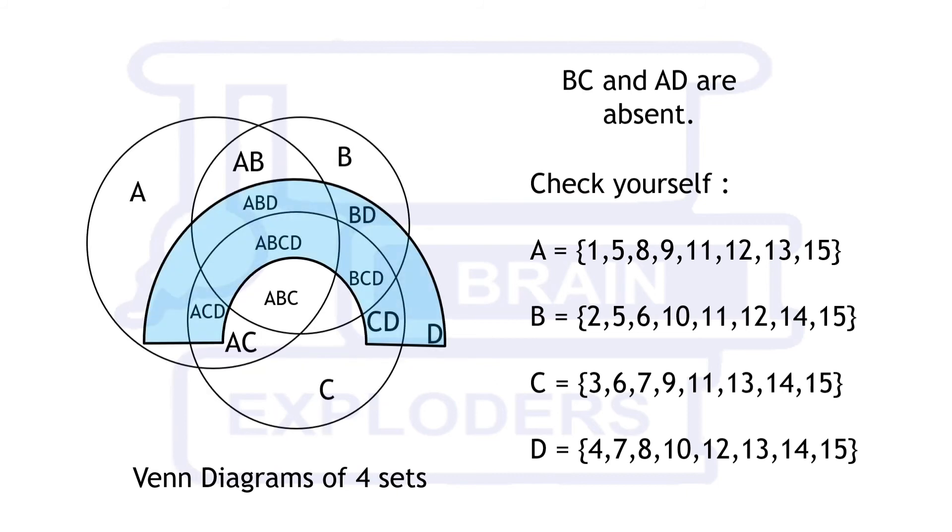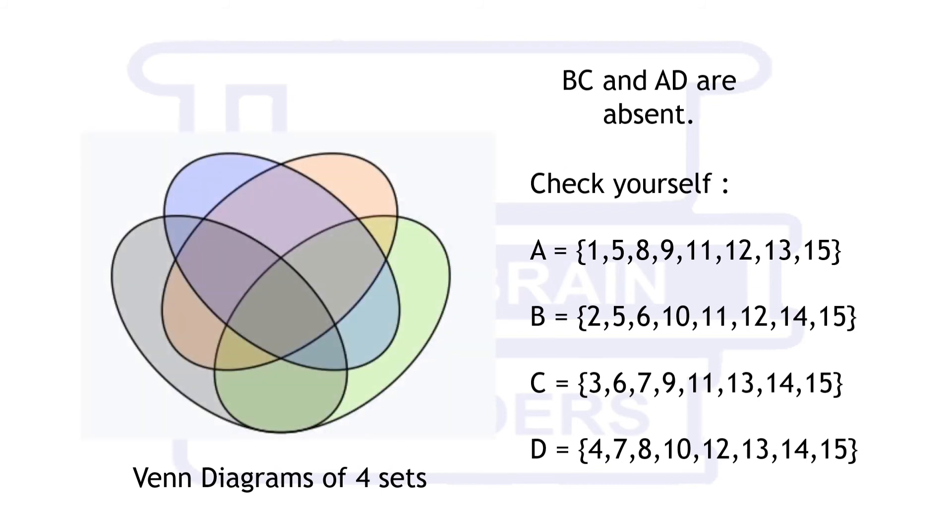Here is one of the ways to draw the Venn diagram of 4 sets. There is a loss of symmetry when the number of sets are more than 3, but you can find some symmetry by using different shapes.